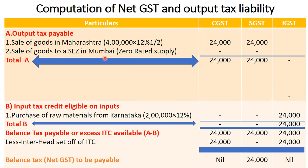The sale of goods to the Special Economic Zone in Mumbai comes under zero-rated supply and is therefore exempt. So the total output tax payable by Sanjana is 24,000 under CGST and 24,000 under SGST, with nil under IGST. This represents the total tax payable on sales made by Sanjana. Next we move to point B, which is the input tax credit eligible on inputs.